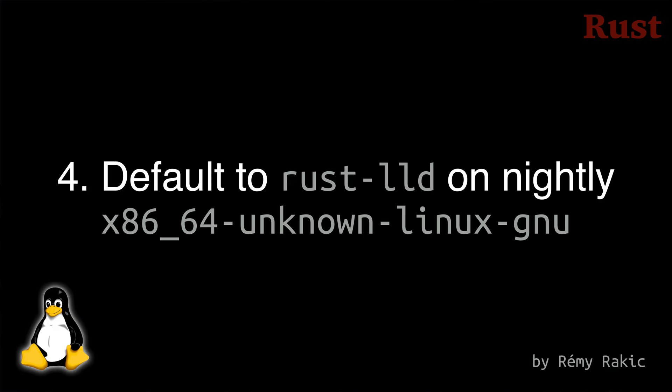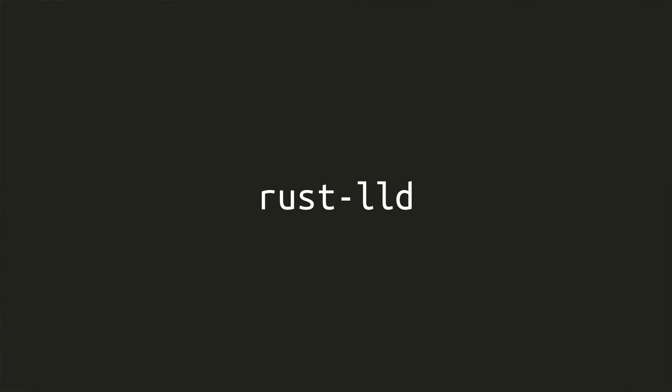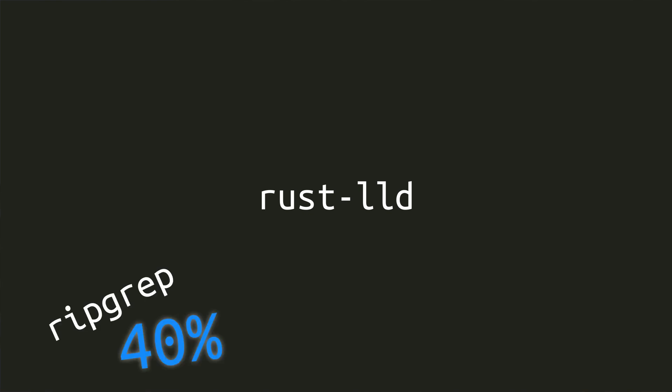Number 4: There's a blog post scheduled to be released May 17th about how the unstable nightly version of Rust will now default to using the more up-to-date version of the LLD linker that Rust ships with, instead of the system linker. This is expected to speed up linking time a ton, which leads to overall builds also being much faster. In the case of Ripgrep, it sped up overall compilation by 40%. A date has not yet been set for when this will hit stable.